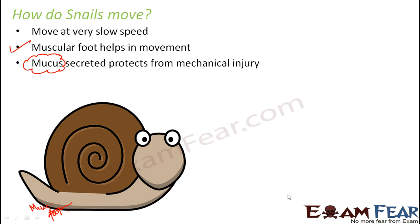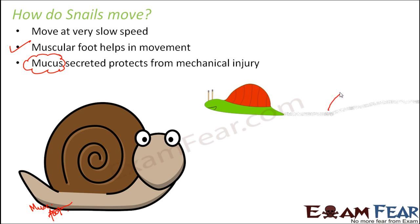When you walk on a slippery surface, you tend to fall down — but movement itself becomes easier on a slimy surface. So when the surface is made slippery by mucus, movement becomes easy for the snail. Due to the secretion of this mucus, wherever you see a snail moving, you would see a trail — a line of mucus left behind as it moves. This trail of mucus is known as the slime trail.